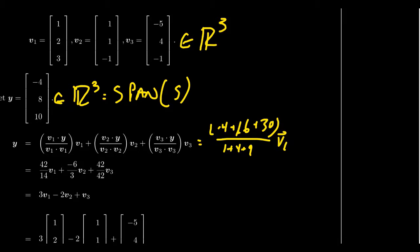So, then we're going to repeat this for the other one. So, we're going to take V2 dot Y. So, that's going to look like negative 4 plus 8 minus 10 above V2 dot V2, which will look like 1 plus 1 plus 1 times that by V2.